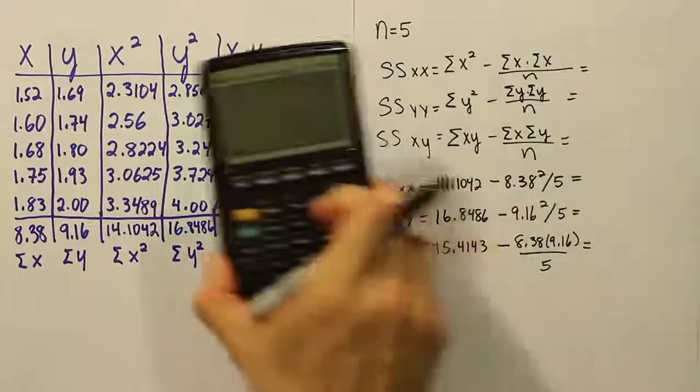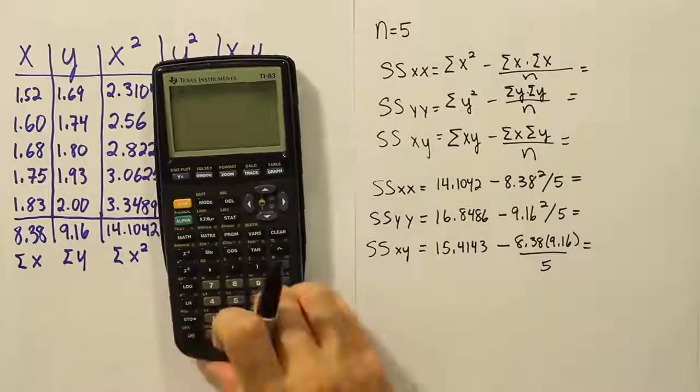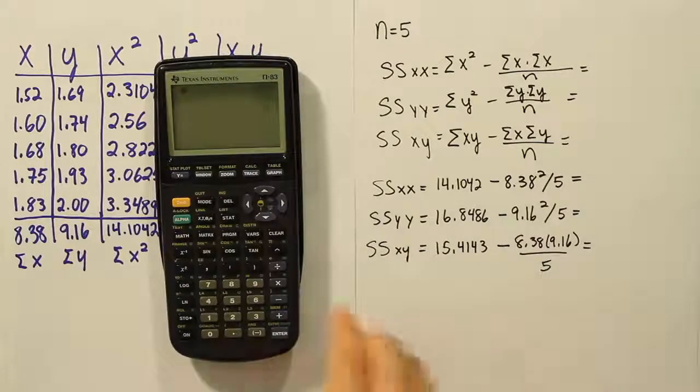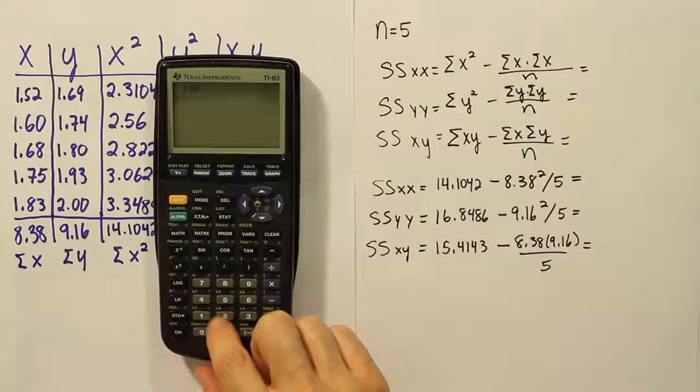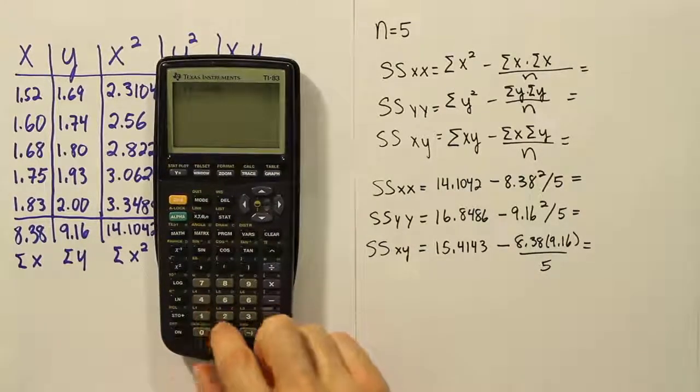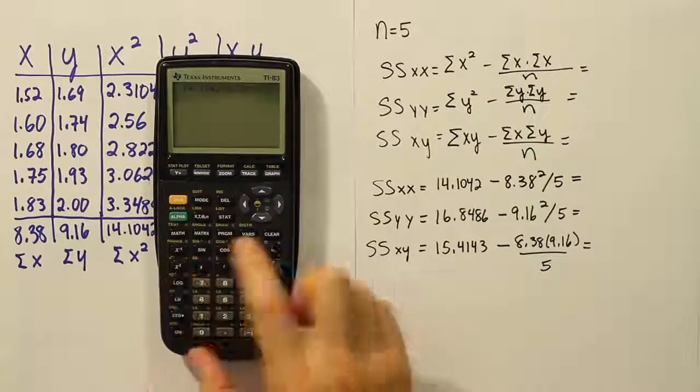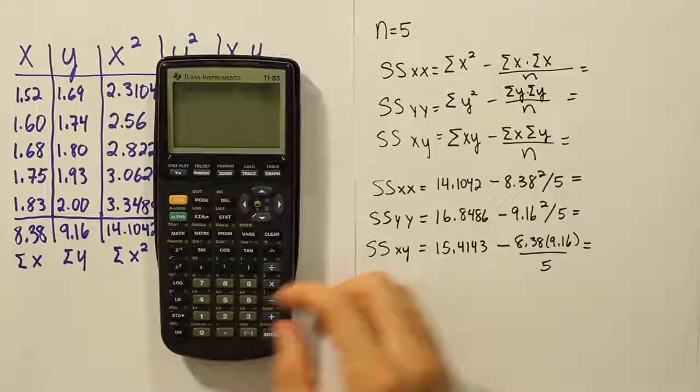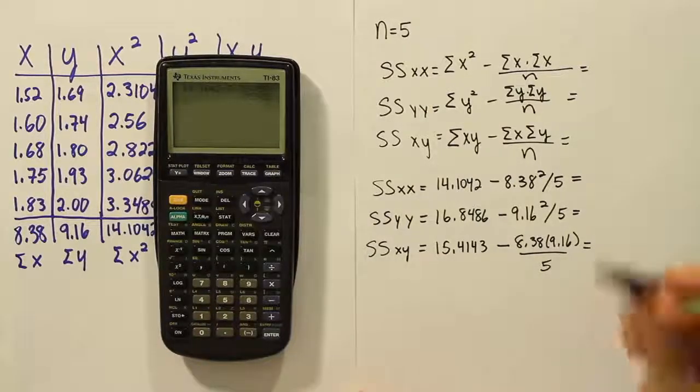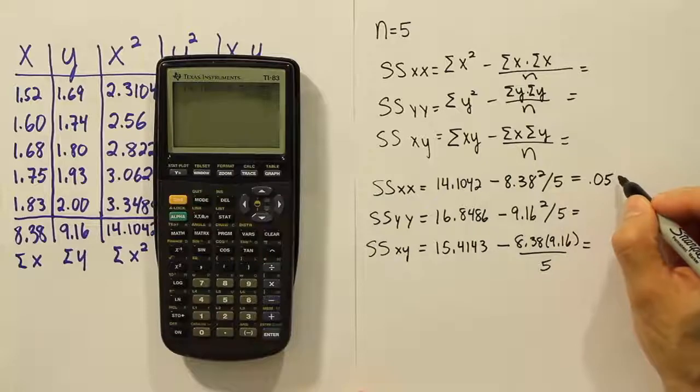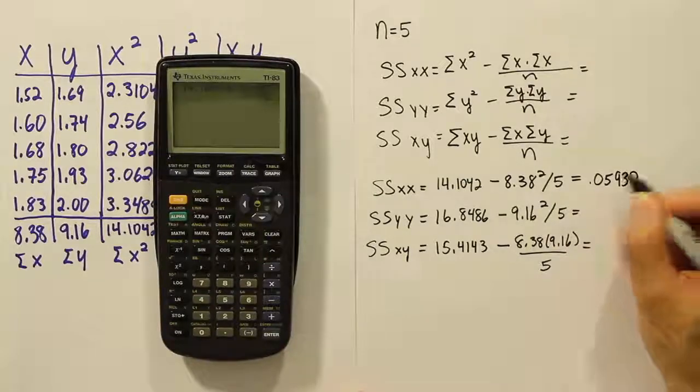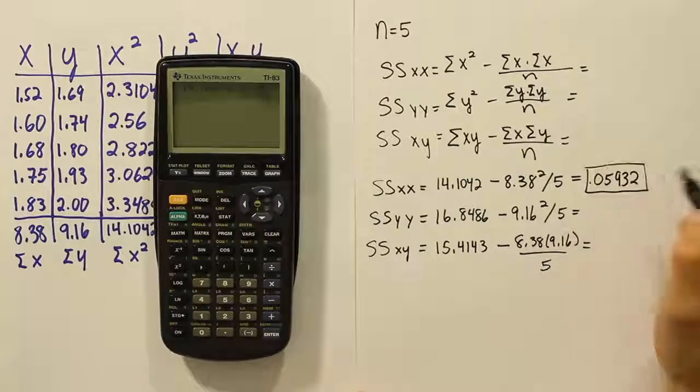All right, now it's time to use the calculator on this. Let's use our calculator to work out all these important details. So for the first one, it's 14.1042 minus 8.38 squared divided by five. And when we finish that, we get this answer 0.05932. That is the sum of square for the X's.